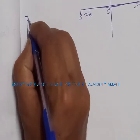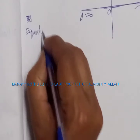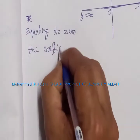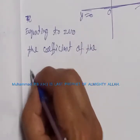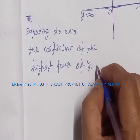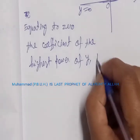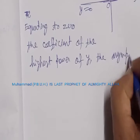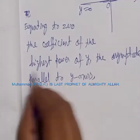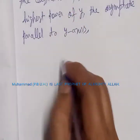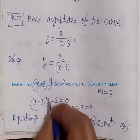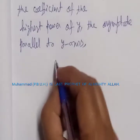For the asymptote parallel to the y-axis, we equate the coefficient of the highest power of y to zero. The highest power of y is 1, and its coefficient is x minus 3. Setting x minus 3 equal to zero gives x = 3.